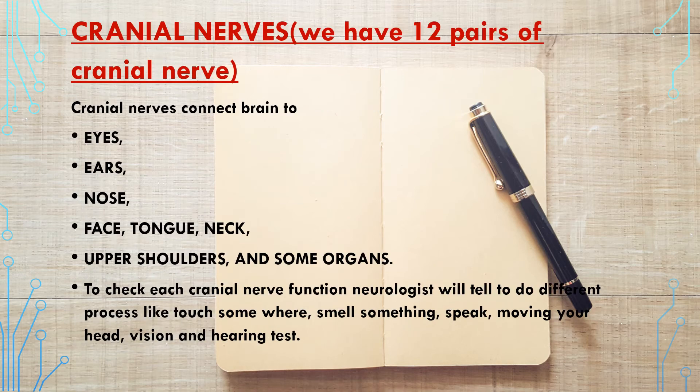Next is cranial nerve checking. We have 12 pairs of cranial nerves. Cranial nerves connect the brain to the eyes, ears, nose, face, tongue, neck, upper shoulders, and some organs. To check each cranial nerve function, the neurologist will ask the patient to do different tasks like touching somewhere, smelling something, speaking, moving their head, and vision and hearing tests.